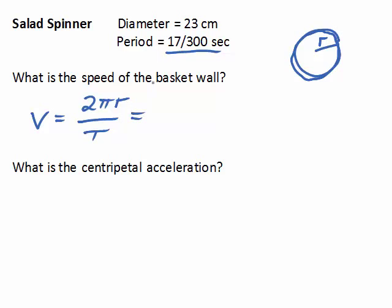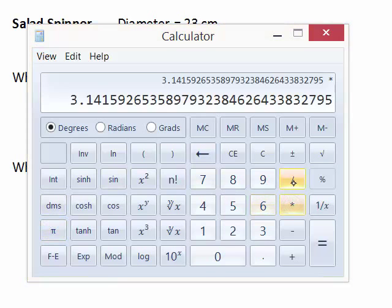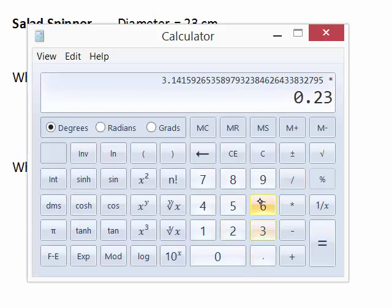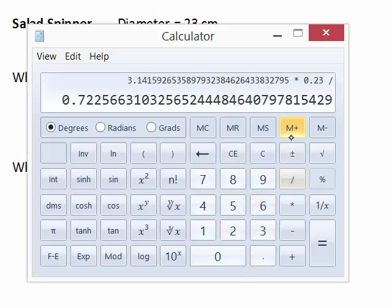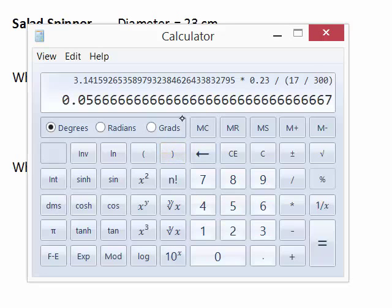So let's go ahead and plug in. I will point out that 2 times r, 2 times the radius, is in fact the diameter. So I'm just going to write this as π times the diameter over the period. And so let's go ahead and plug that in. Here's a calculator. And we're going to do π times the diameter. The diameter was 0.23 meters. And we're going to divide by the period. I didn't calculate it out as a decimal number, so I'm going to go ahead and put it in as 17 three-hundredths. Remember, it was 17 frames at 300 frames per second.